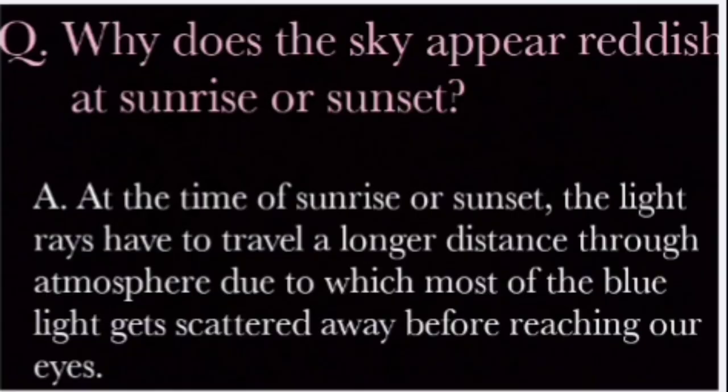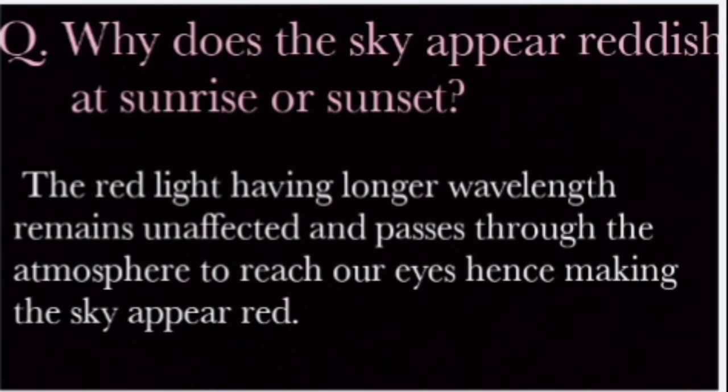Why does the sky appear reddish at sunrise or sunset? At the time of sunrise or sunset, the light rays have to travel a longer distance through atmosphere, due to which most of the blue light gets scattered away before reaching our eyes. But the red light having longer wavelength remains unaffected and passes through the atmosphere to reach our eyes, hence making the sky appear red. So with this children we come to an end of this very interesting lesson. Hope you all enjoyed. All the best, bye.